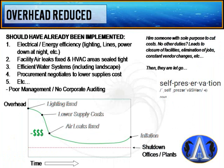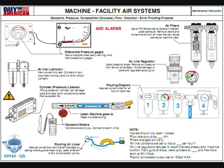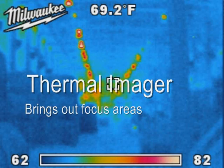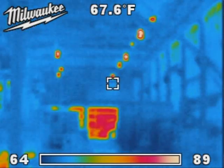There are all kinds of measures you can take to reduce your cost, and this should have been implemented already within companies — it's been popular for a long time in all industries. If someone hasn't implemented this yet, they're way behind. Categories include electrical energy efficiency, facility air leaks, heating, ventilation, and air conditioning — you want all that sealed tight. Thermal imagers are a really good tool to bring those issues to light.